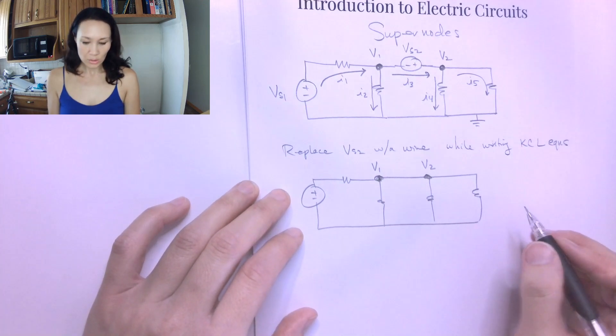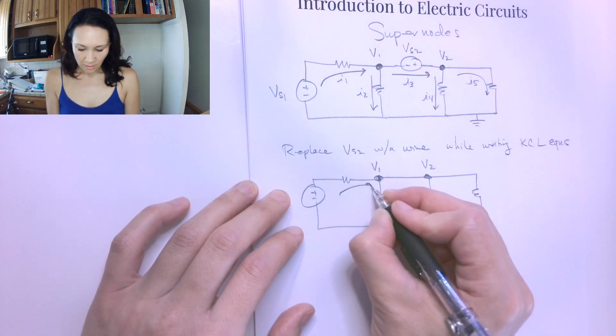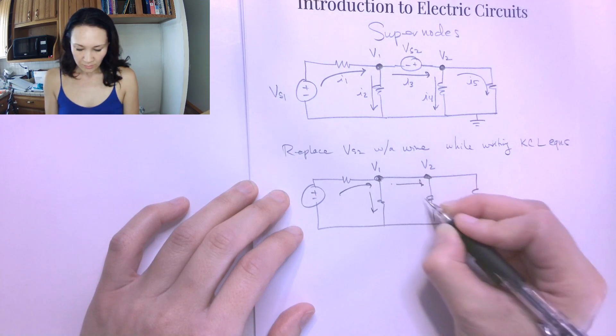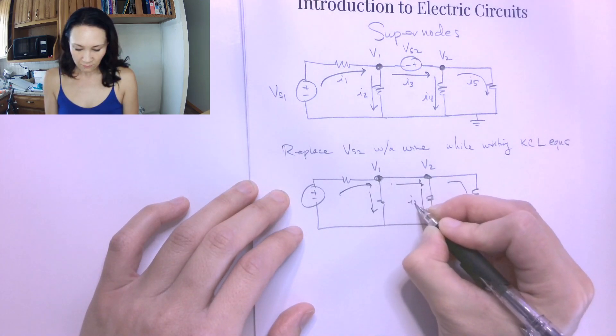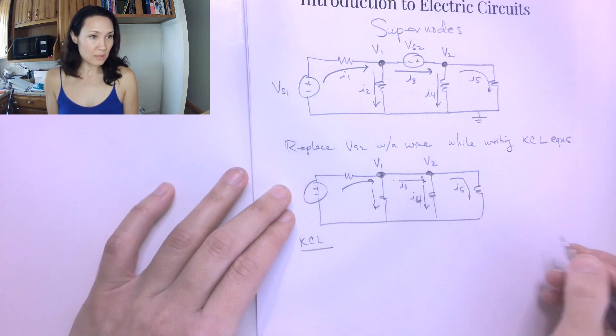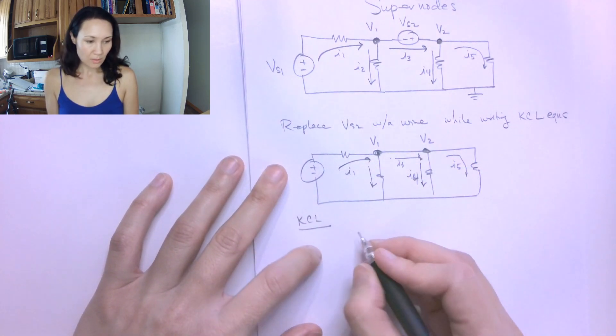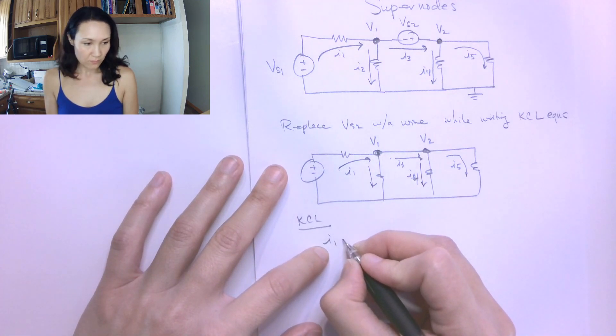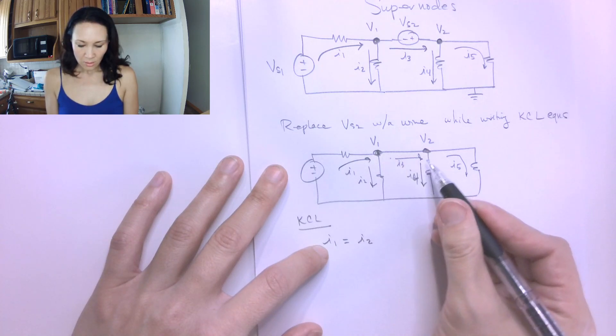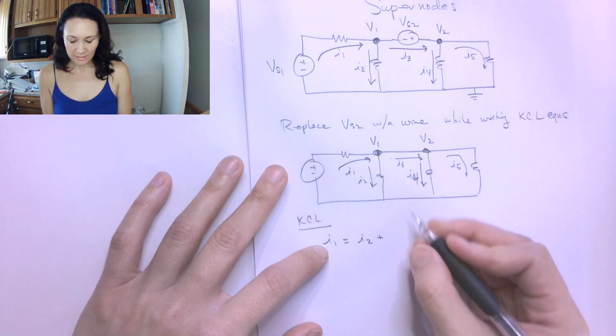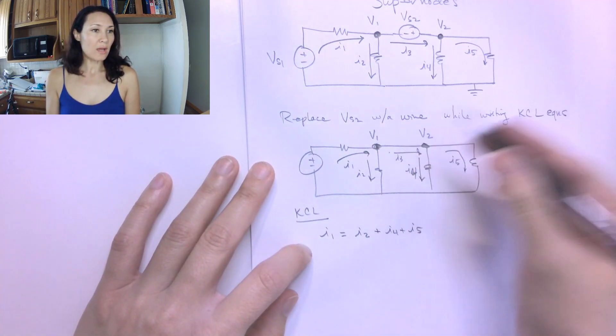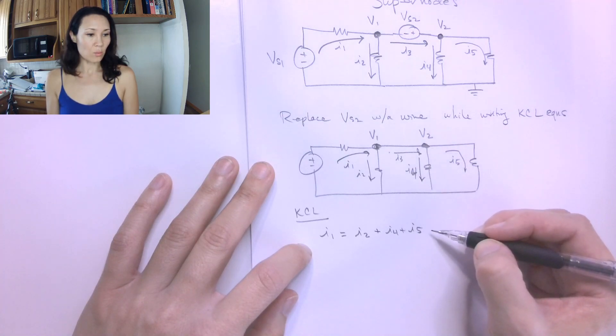So then once you have all your KCL equations, ours would be that I1 comes in, I2 comes out. This I3 is actually going to be split amongst I4 and I5. So our KCL equations for this particular example would be, I1 comes into V1, and then we have I2 coming out. We have I3, which is split between I4 and I5. So I can just replace that I3 with I4 plus I5. So there's my KCL equation. I took out this source that was between the nodes in order to write this equation.